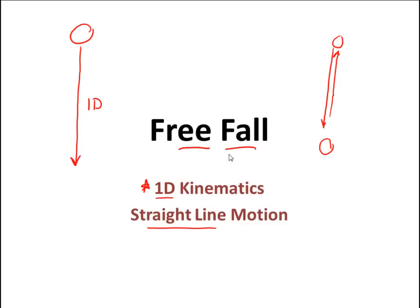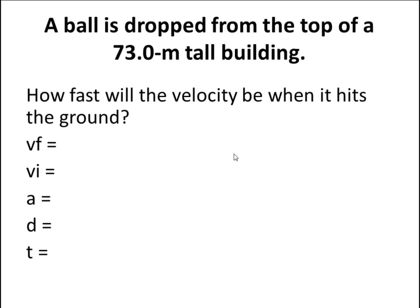Today though, we're looking at simply a free falling object. The example for today's lesson is going to be a ball that is dropped from the top of a 73 meter tall building. And I want to know how fast or what will the velocity be when it hits the ground. So let's check this out guys, let's look at the givens here.